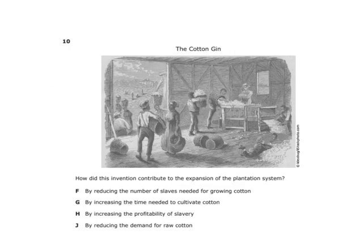The cotton gin — how did this invention contribute to the expansion of the plantation system? By increasing the profitability of slavery. The cotton gin let us produce more seedless cotton faster; with more slaves picking more cotton you could produce more, ship it north, and it became more profitable. The more slaves you had, the more money you made thanks to the cotton gin.